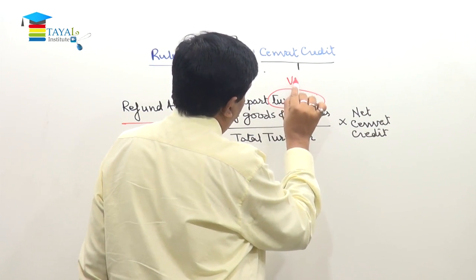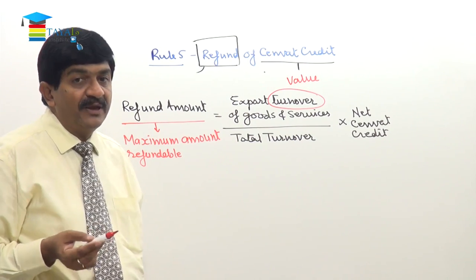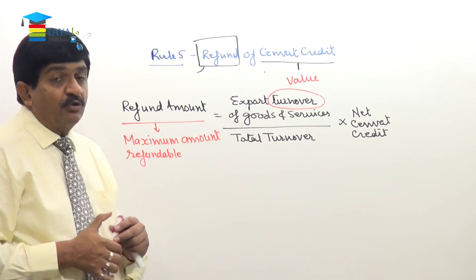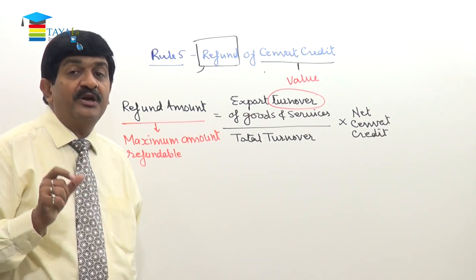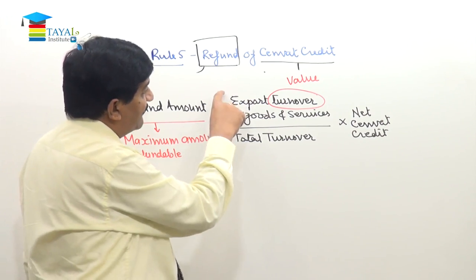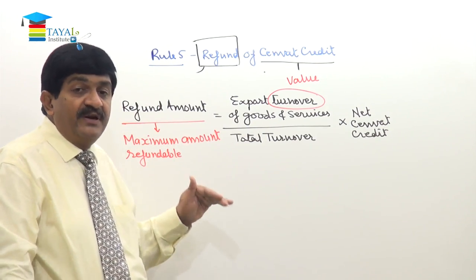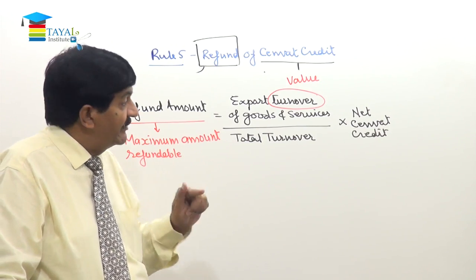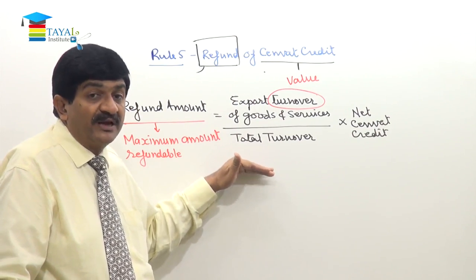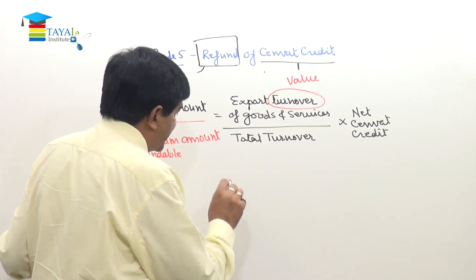Now export turnover — first, only the assessable value of the goods will be computed. In addition to value, we also have to understand that we will take the value of the goods or services which are actually exported during that period. The period for which refund is claimed is called the 'relevant period'. Whatever the period — whether 15 days, a month, a quarter, or half year — that will be called the relevant period.